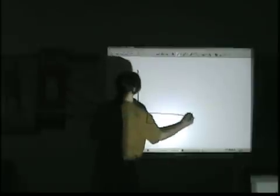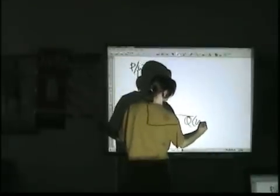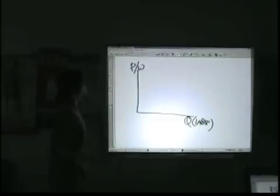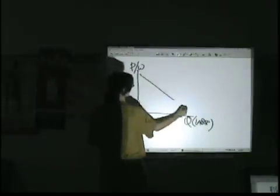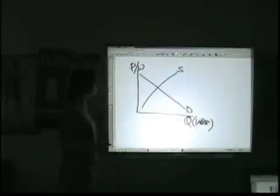For the monopsonist or in the monopsonistic market, what you're going to see is going to be different. So again, price, wage, and here we're talking about quantity of labor. What you're going to have is demand, supply. Okay, looks fairly typical.